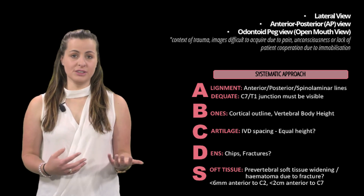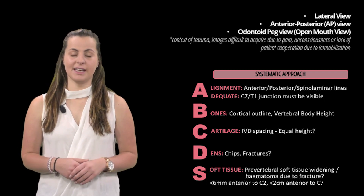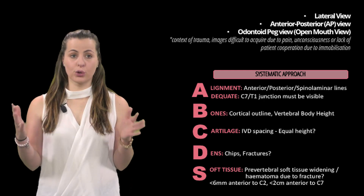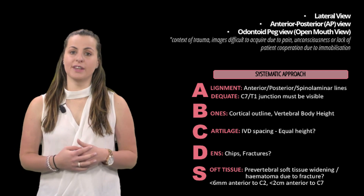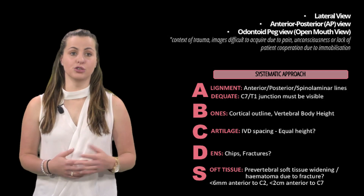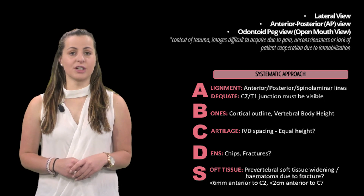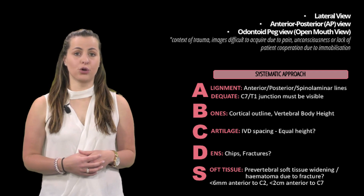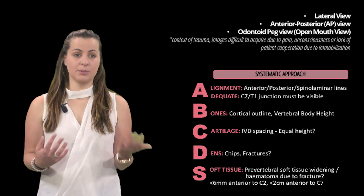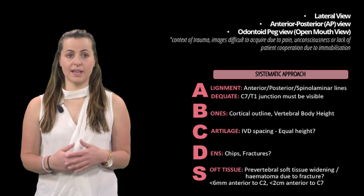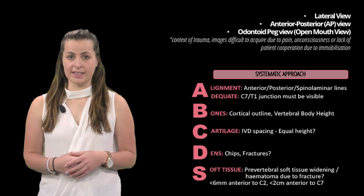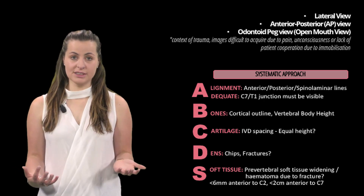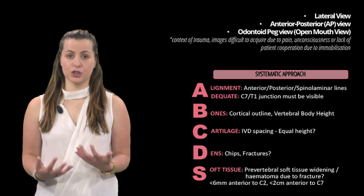Next, we assess the bones. Each vertebra must be examined for fracture, collapse, or avulsion by tracing the cortical outlines of each bone and making sure the facet joints are parallel to one another. For cartilage or intervertebral discs, these must be examined for symmetry and normality, ensuring they are of relatively equal height between each vertebra. We also need to assess the dens for chips or fractures — this is also called the odontoid process.